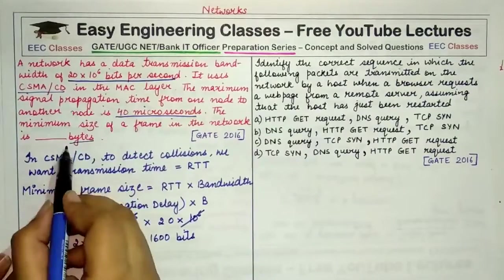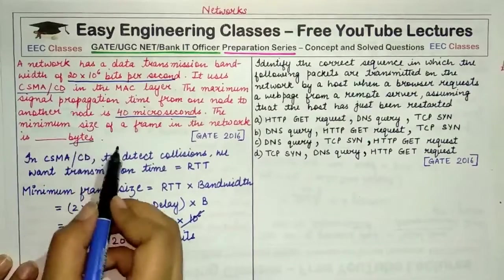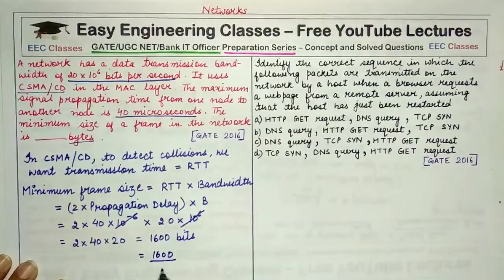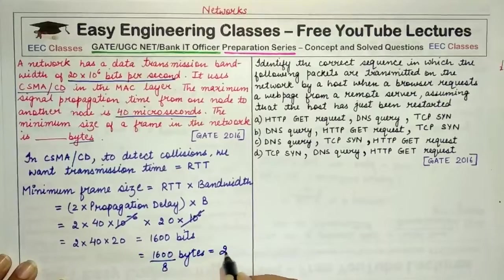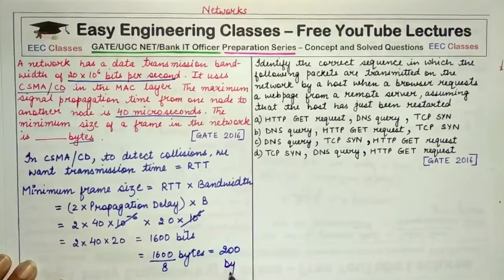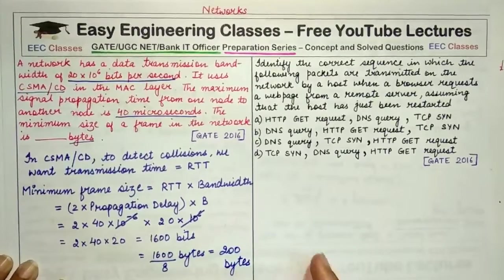So 10^6 and 10^-6 cancel out. You are left with 2×40×20, which gives you 1600 bits. Since you are asked the answer in bytes, therefore 1600 divided by 8 would give you the answer in bytes, which is equal to 200 bytes.